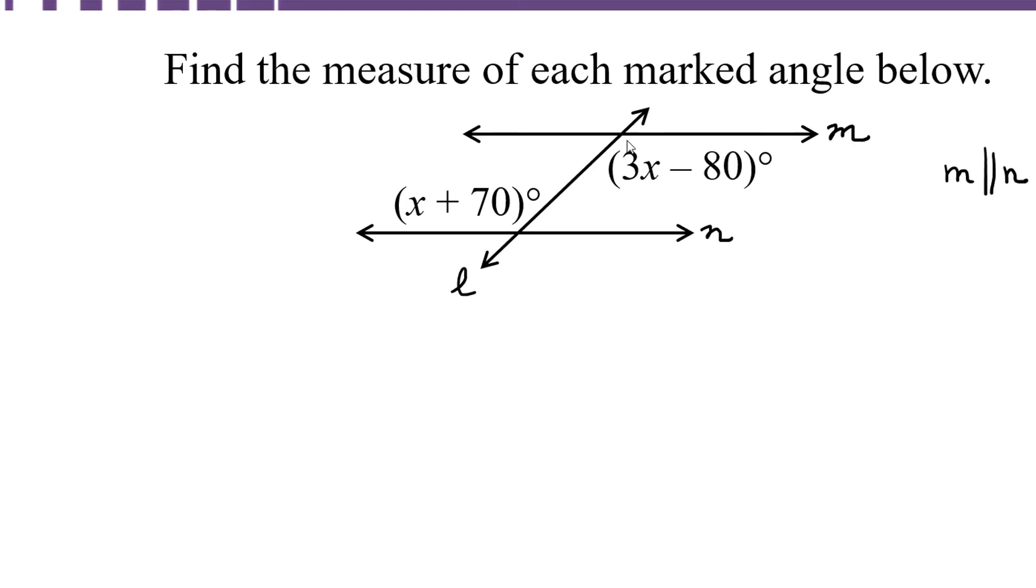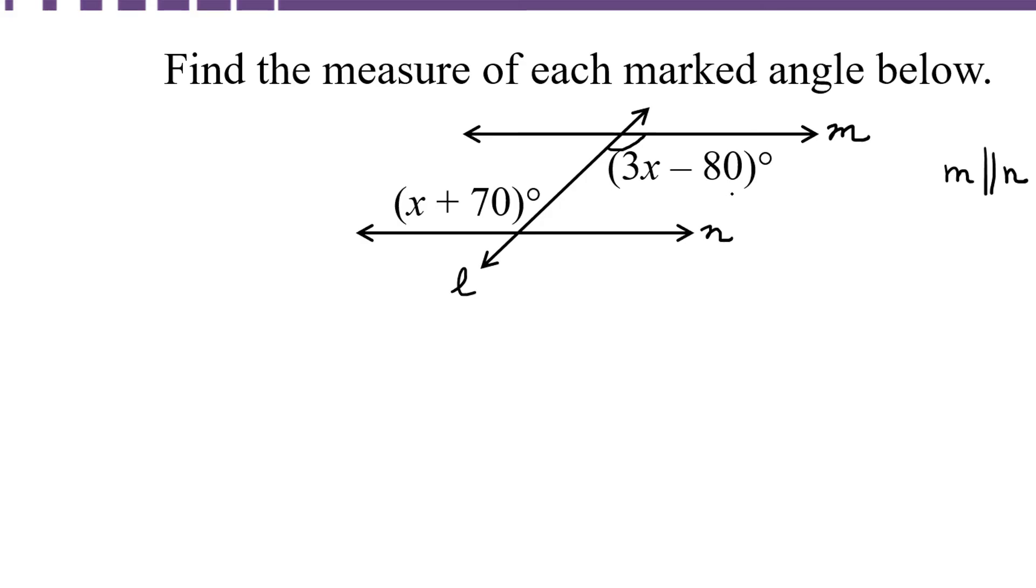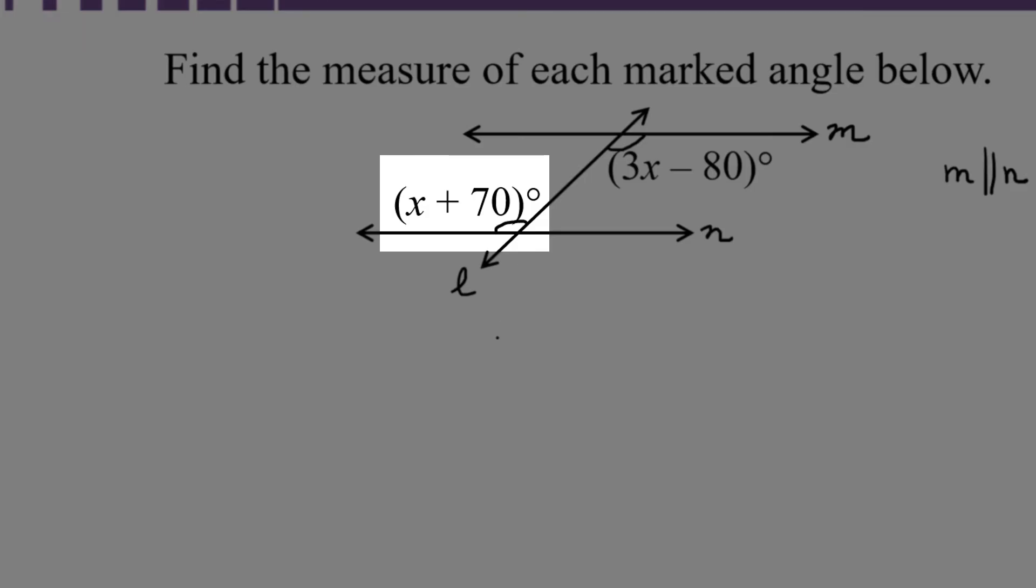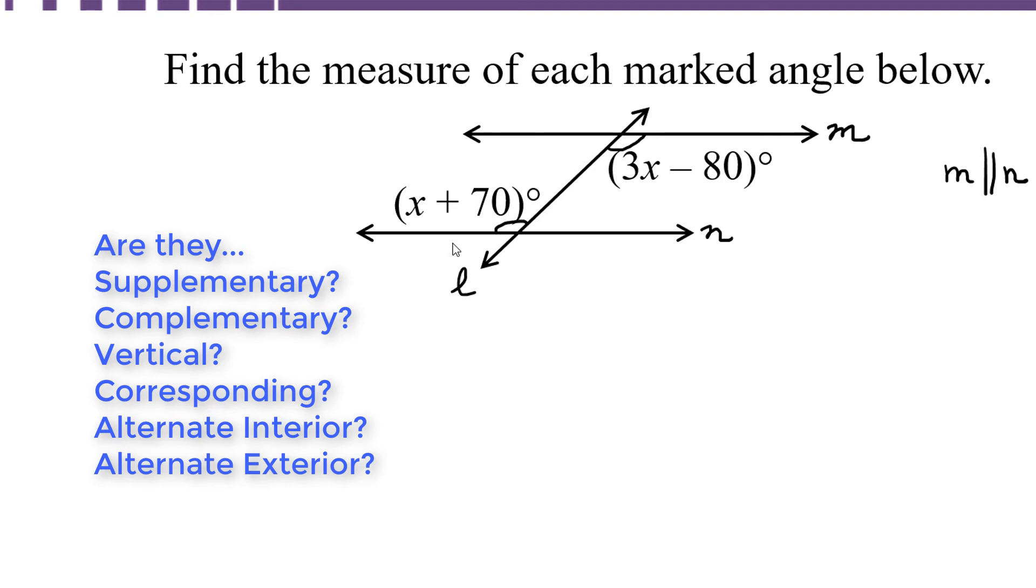What this means is that the angle between the transversal and line M here is 3x minus 80, and the angle between the transversal and line N over here is x plus 70. And we're supposed to use that information to find the measures of those angles. In order to do that we need to figure out the relationship between the angle that's marked x plus 70 and the angle that's marked 3x minus 80.